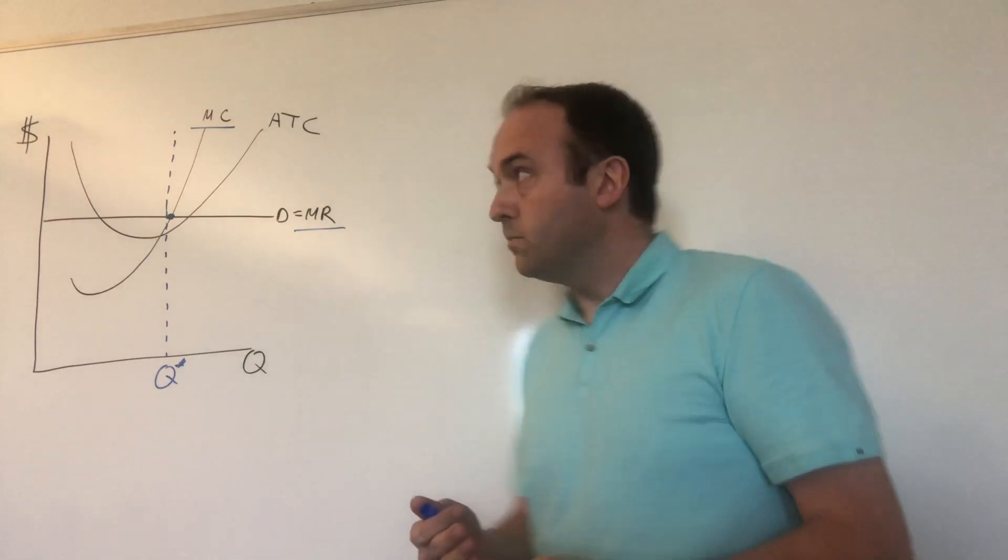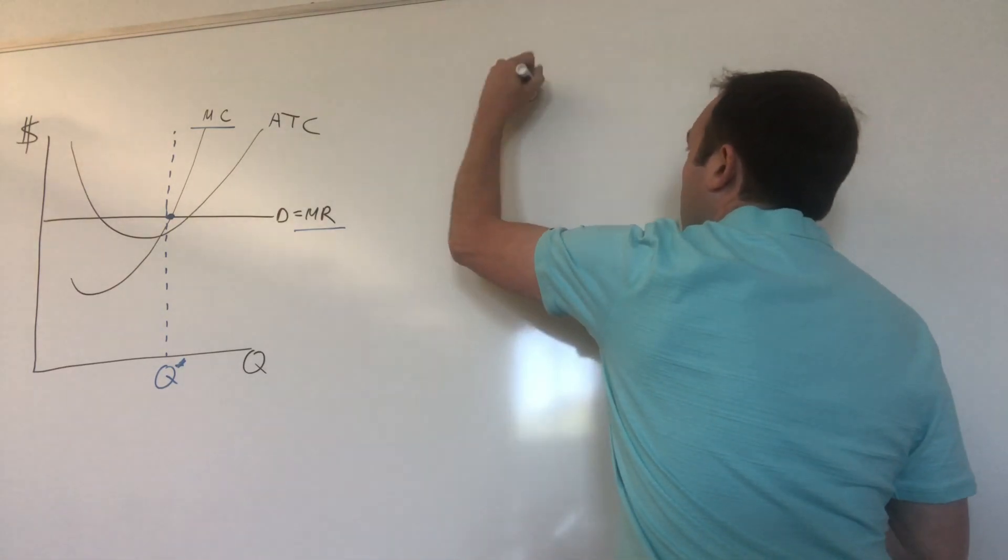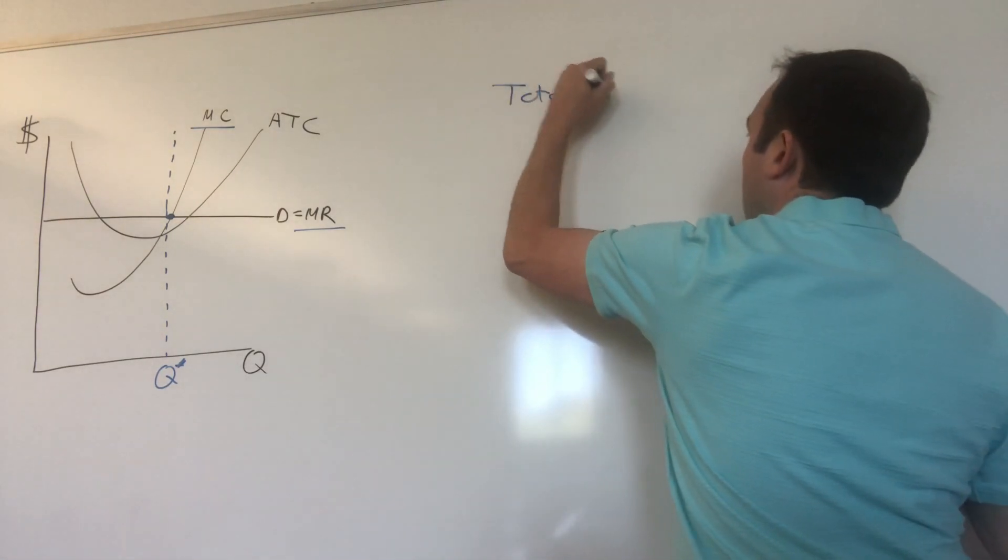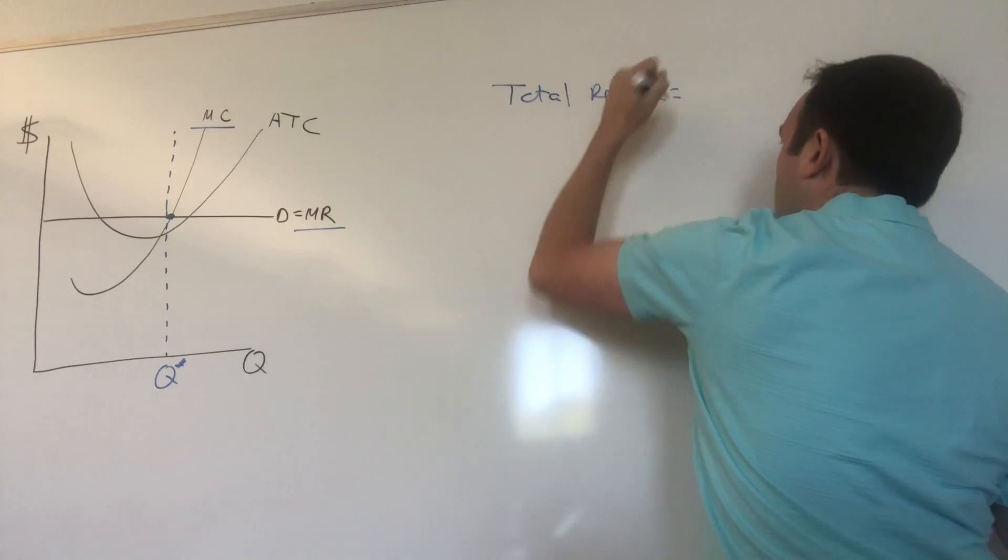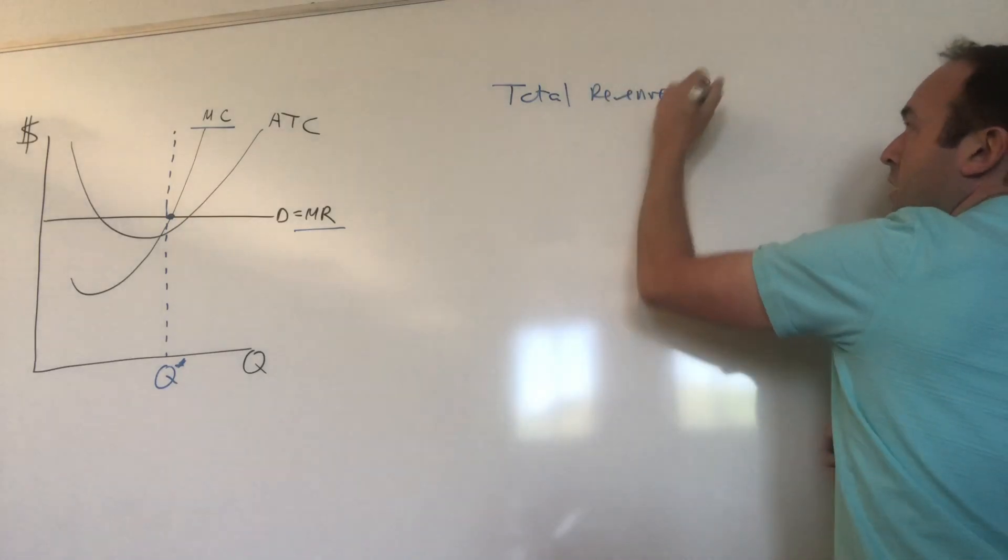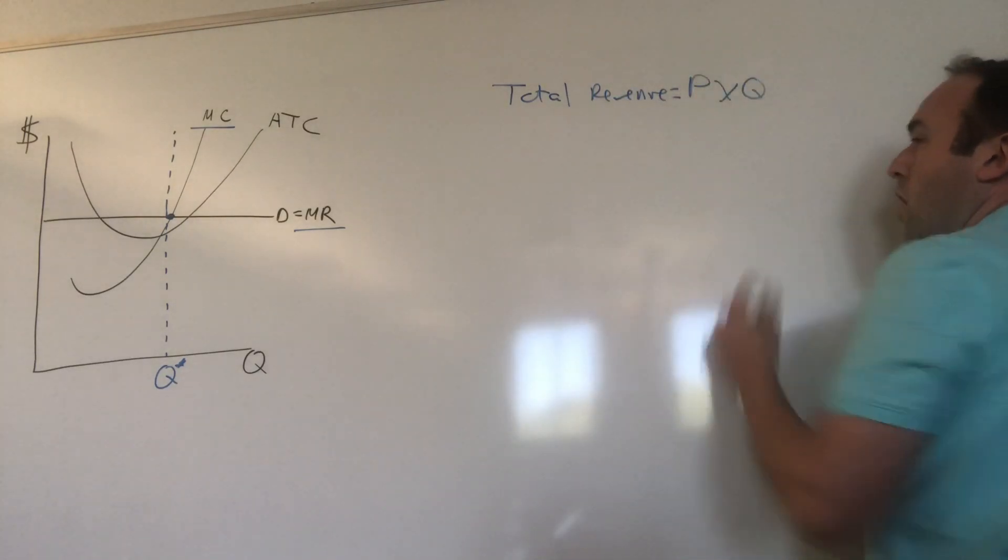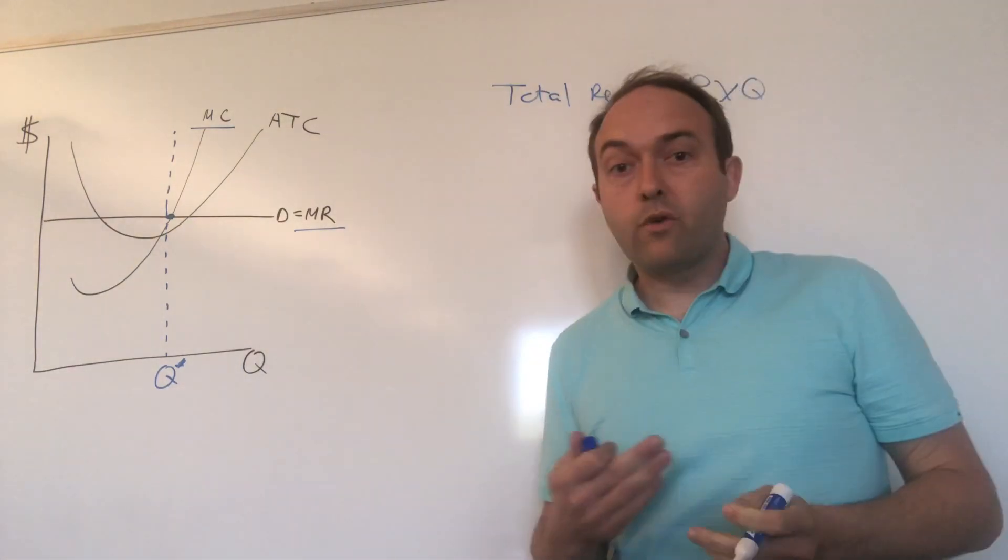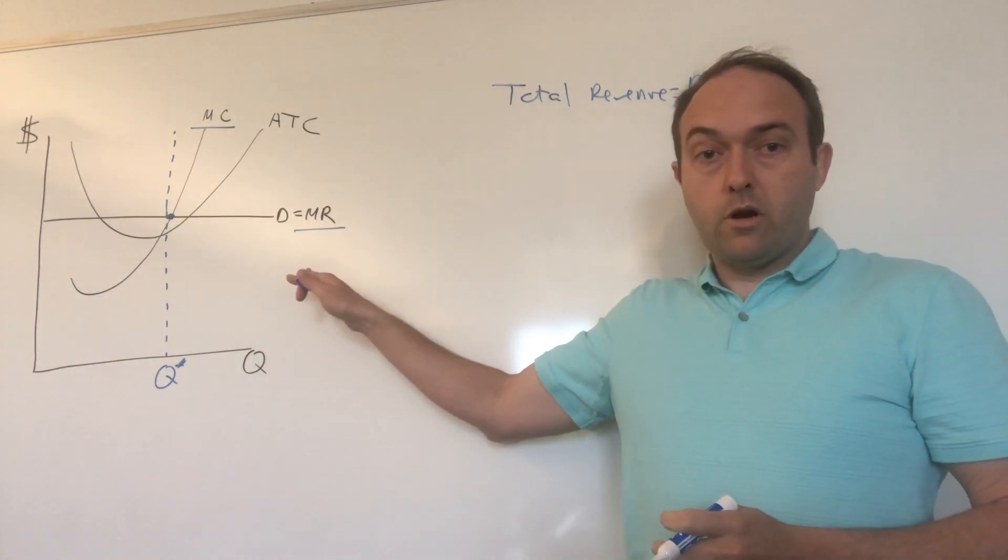Let's talk about the total revenue. Total revenue equals the price they charge times the quantity that they sell. Those first two numbers you should get from your chart over here.